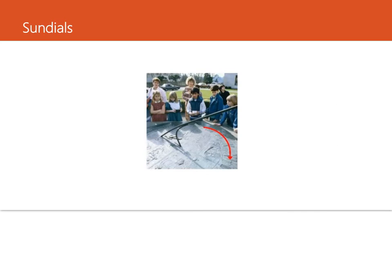Since shadows move in predictable ways, we can use shadows to tell time. A sundial is a clock that works by using the shadow of a pole in the center of a circle of numbers that stand for the hours in a day. The pole's shadow moves around the circle as the sun is in different positions during the day. The picture shows students studying a sundial, and the pole's shadow is moving in the direction shown by the red arrow.